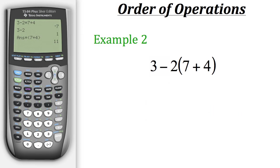So how would we do this one correctly? Well this expression isn't anything too complex. We can actually just type it in exactly how we see it. So if we do 3 minus 2 and then parentheses 7 plus 4, the calculator will do the correct order of operations, giving us the correct answer, that being negative 19.